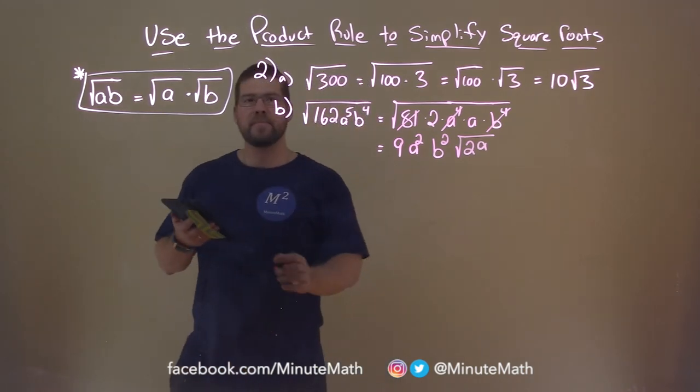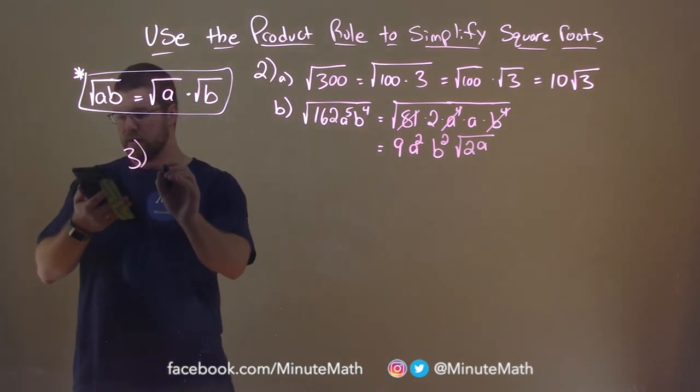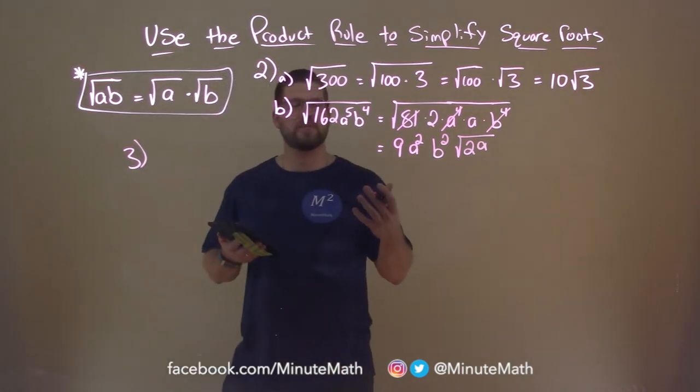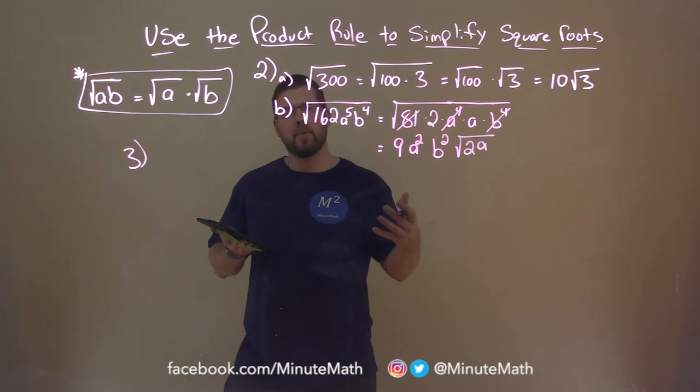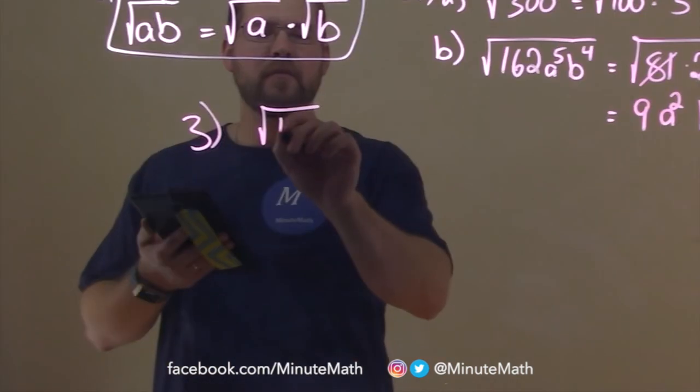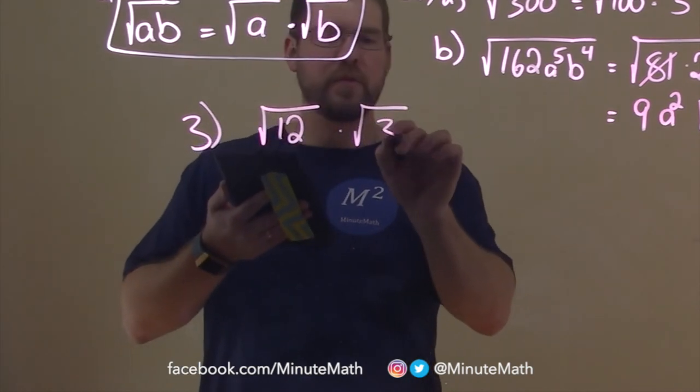So let's try another example. Example 3, and a little one here. So we're going to simplify this expression. It's already going to be broken apart, but we're going to maybe combine it together. So we have the square root of 12 times the square root of 3.